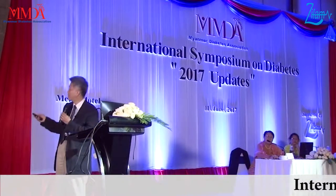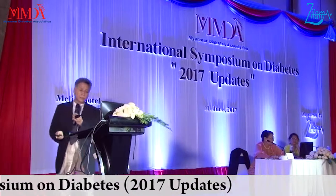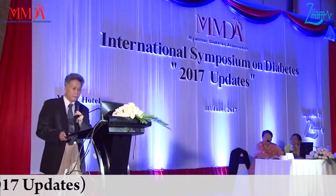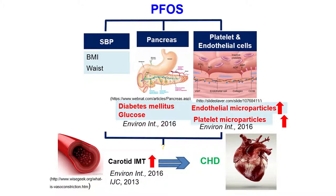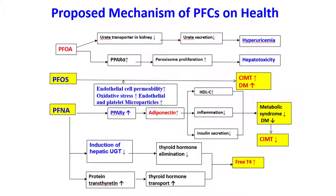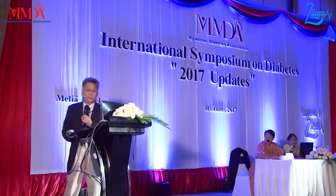This demonstrates that endothelial and platelet microparticles increase diabetes and glucose levels and CMT, so the risk of chronic heart disease should be suspected. This is the proposed mechanism of PFMA: PFMA increases endothelial dysfunction and oxidative stress, increasing CMT and DM. Conversely, PFMA has a protective effect by increasing PPAR gamma and adiponectin levels, reducing CMT and the risk of diabetes.